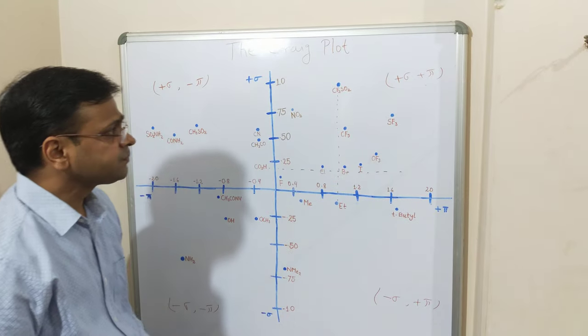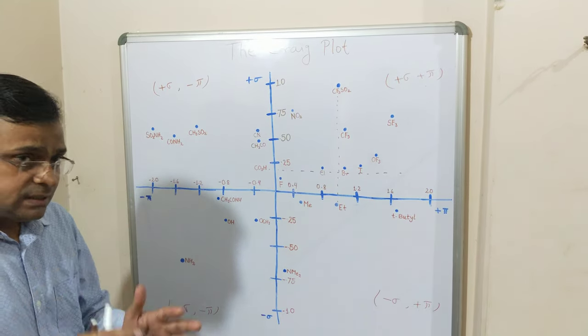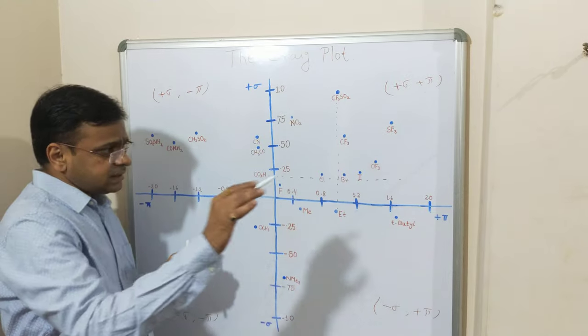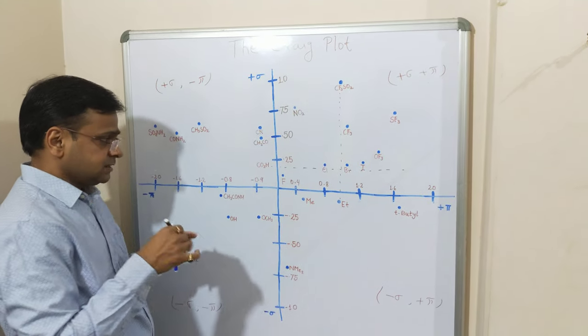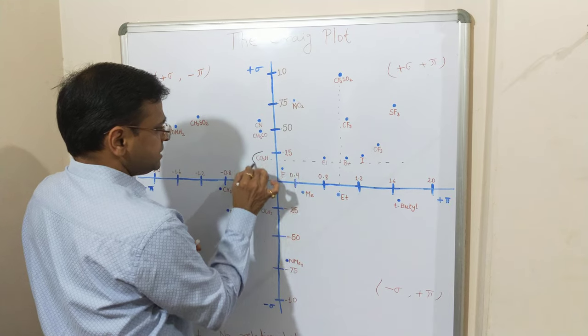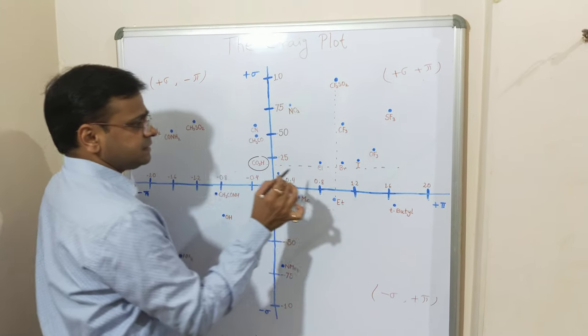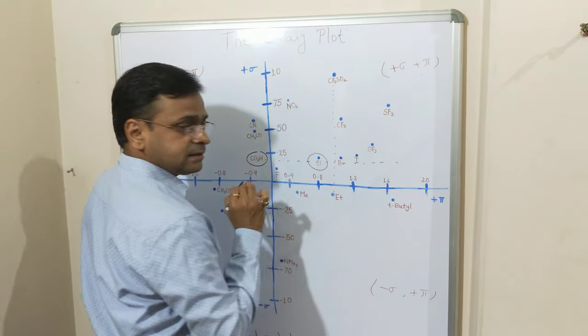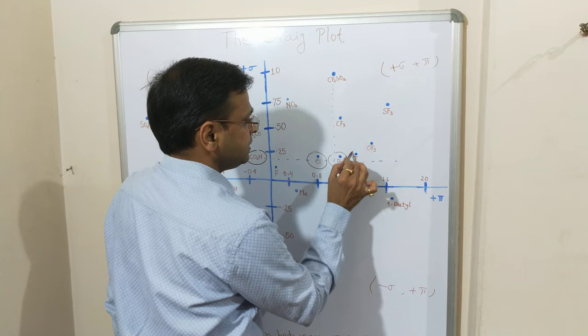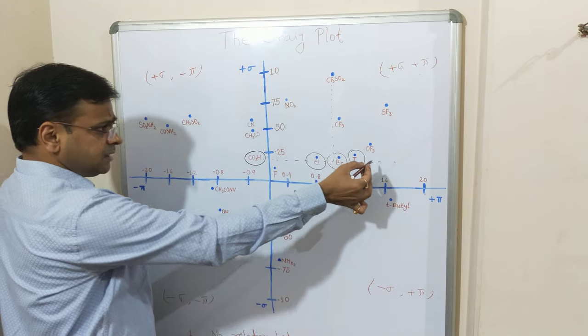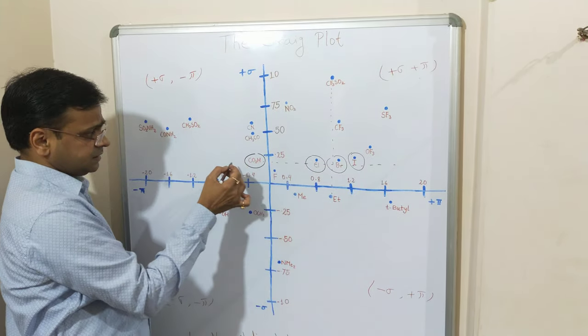If you see each and every element, suppose this is COOH carboxylic, this is Cl, this is bromine. If you draw a horizontal line, it is already drawn here.